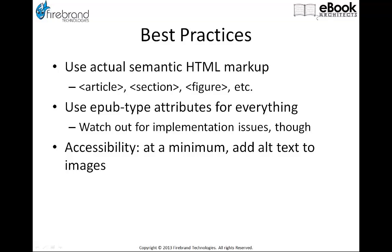Accessibility is a best practice. At a minimum, you need to add alt text to all your images and make sure they're carefully described. There's a really good book from O'Reilly that talks about accessibility in EPUB 3. I'd recommend getting up to speed on what that accessibility looks like and what it would take to get your books up to speed on the accessibility front.